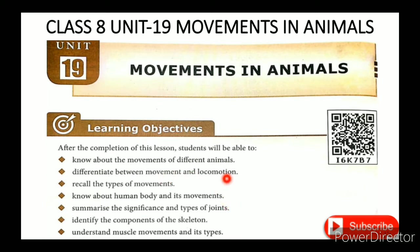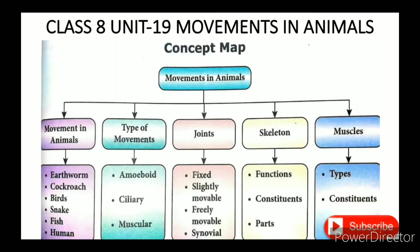You will have six topics in this lesson. First topic: Movement and Locomotion. Second topic: Movement in Animals. Third topic: Types of Movements. Fourth topic: Joints. Fifth topic: Skeleton. Sixth topic: Muscles.